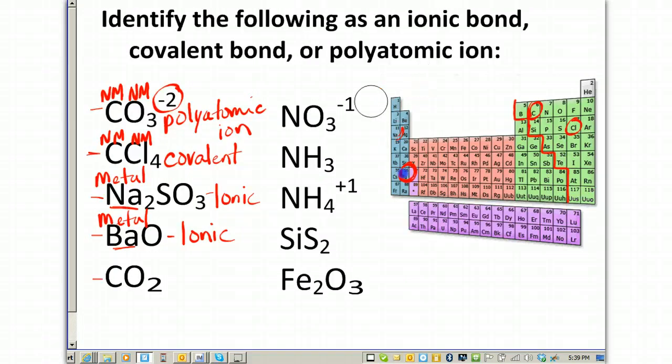CO2 is carbon and oxygen. Here's carbon, element number 6, here's oxygen, element number 8. Because both of these elements are nonmetals, nonmetal plus a nonmetal makes this covalent. You could also say because there's no metal present, it's covalent as opposed to ionic.